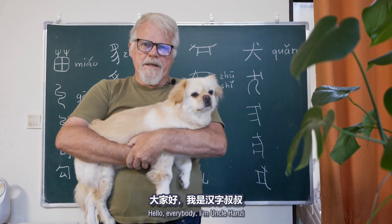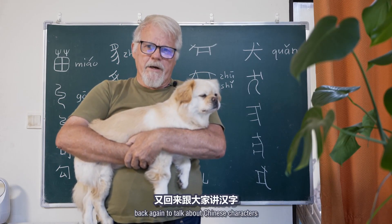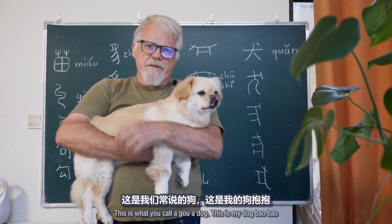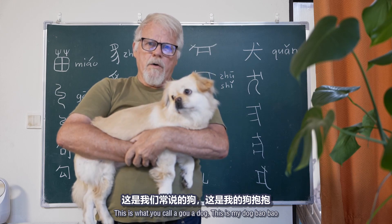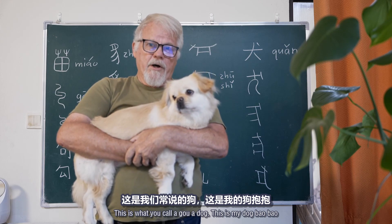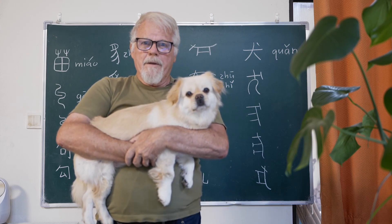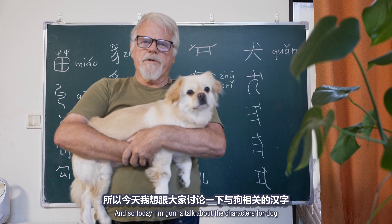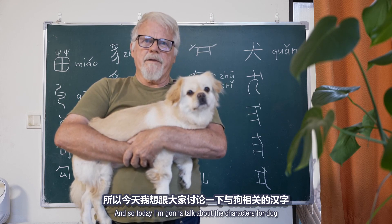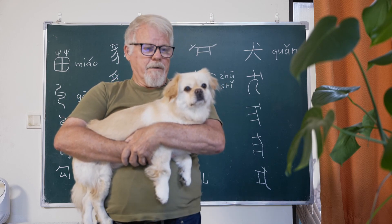Hello, everybody. I'm Uncle Han. This is back again to talk about Chinese characters. This is what you call a gǒu, a dog. This is my dog, Baobao. And so today I'm going to talk about the characters for dog.